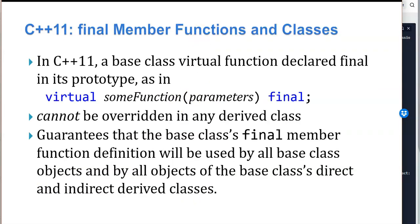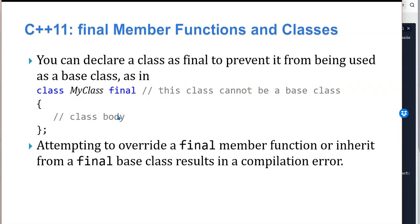In C++11, the concept of a final function exists — it can't be overridden. We can say we have a function in our base class that can never be overridden and we use the default implementation. You can also declare a class as final so it can't be used as a base class. If you attempt to override a final member function or inherit from a final class, you will get a compiler error.